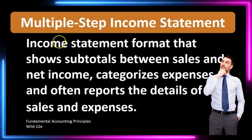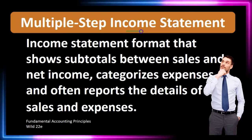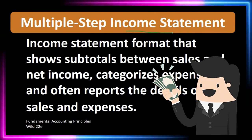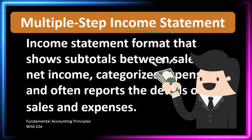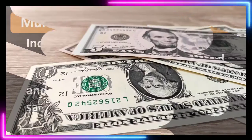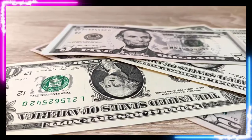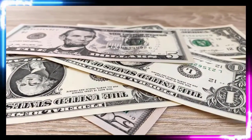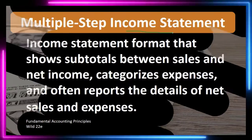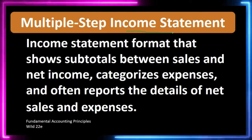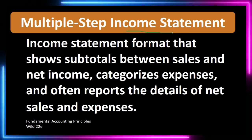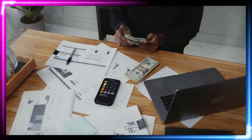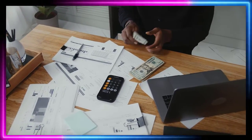The multi-step income statement is a format of an income statement — representing revenue and expenses, with the bottom line being net income. We can contrast the multi-step income statement to a single-step income statement, a more simplified version where we basically have one group of revenue, one group of all expenses, and then calculate net income. Multi-step means we're going to have more subcategories along the way to eventually get to net income.